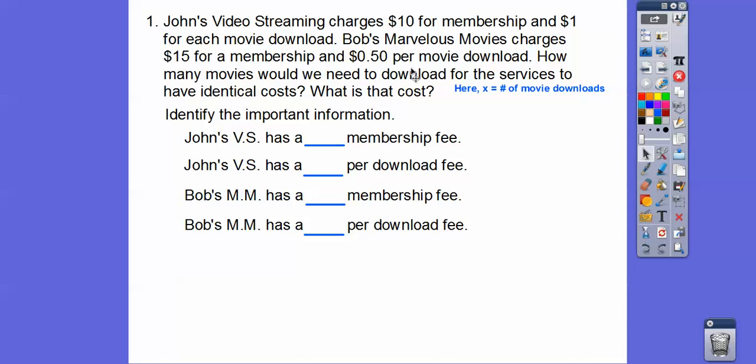And Bob's is $15, 50 cents per download. So those are our mx plus b's right here. Here's our mx plus b. Here's our mx plus b right there. So our functions, our J of X are X plus 10 or 1X plus 10. And B of X is 0.5X plus 15.